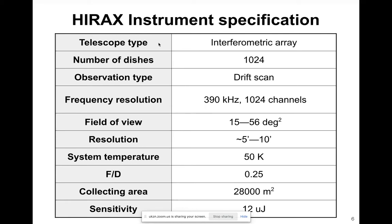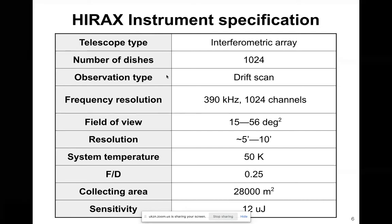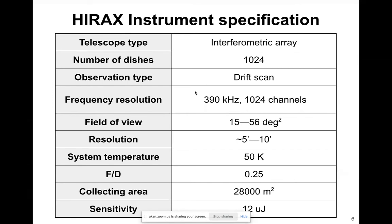This is a table describing the IRAQS instrument specification. IRAQS is an interferometric array with 1024 dishes. The type of observation we plan to do is a drift scan — we'll use the rotation of the Earth to our advantage in the east-west direction to perform observations. The frequency resolution is 390 Hz, brought about by the 400 MHz bandwidth and a digitizer with 1024 channels.